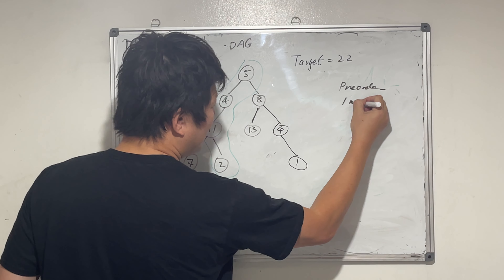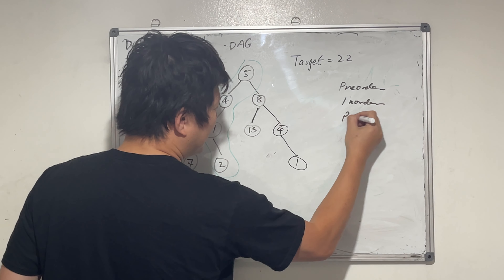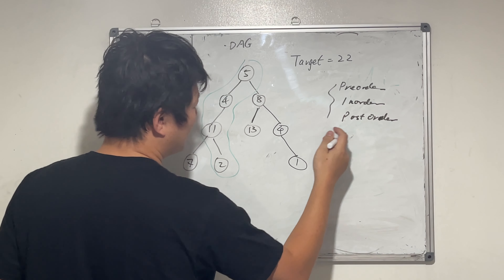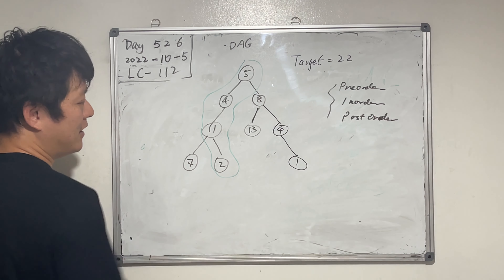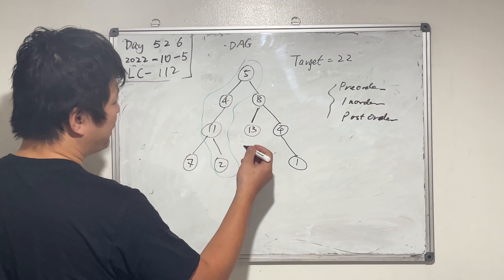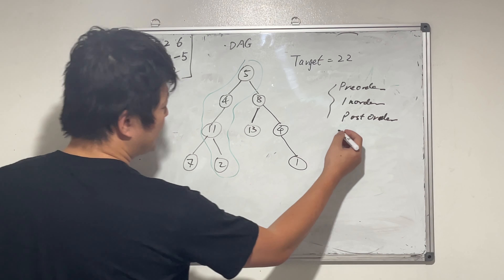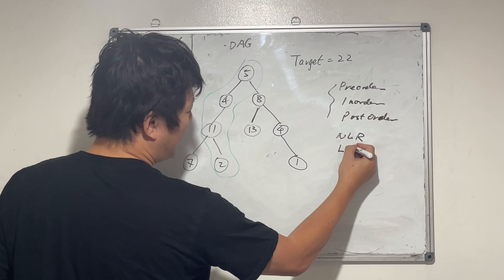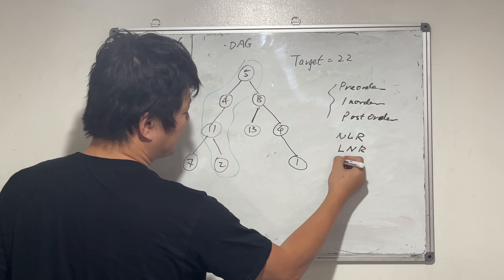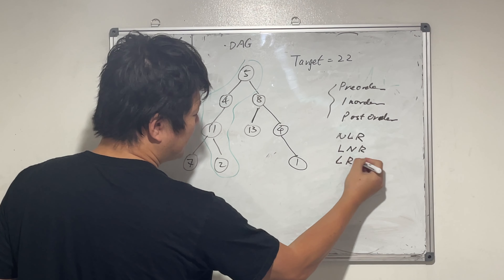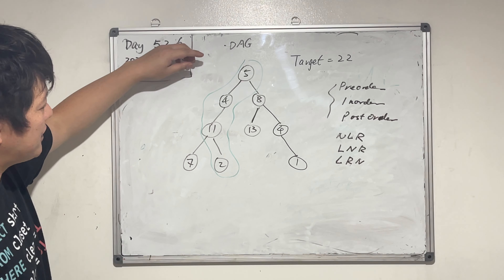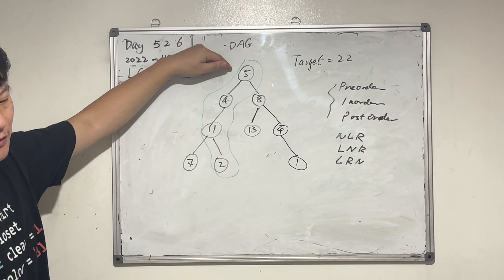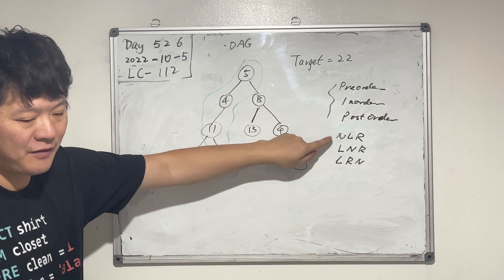The three traversal orders are pre-order, in-order, and post-order — and also reverse in-order. Pre-order is node-left-right, in-order is left-node-right, post-order is left-right-node. So for depth-first search in pre-order, the order is node-left-right.